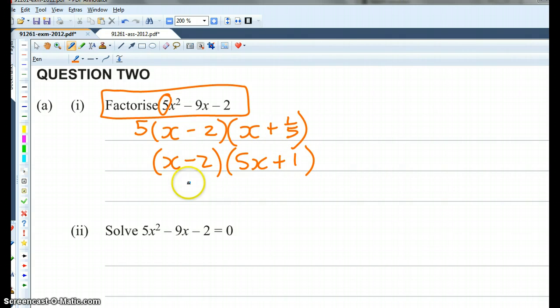I can then check. 5x squared, check. Plus x. Minus 10x, check. Minus 2, check. So I factorized. So what I did is I found the solutions. From the solutions, I chose my factors, and then I chose my multiplier. Okay? So that's the first method.